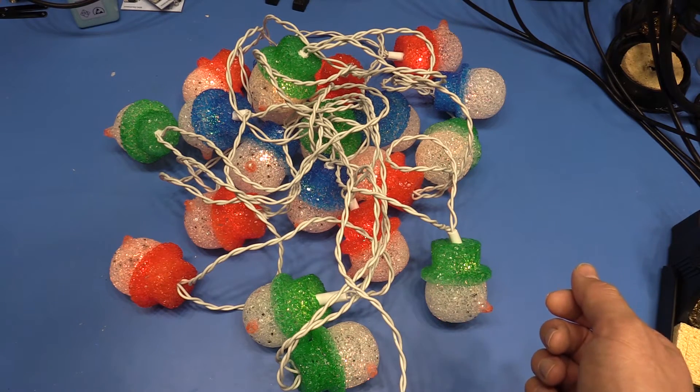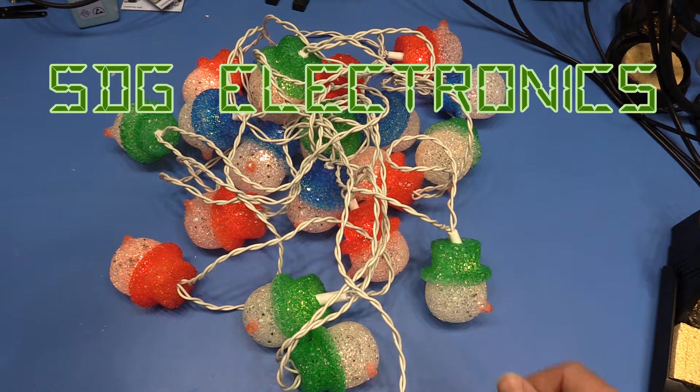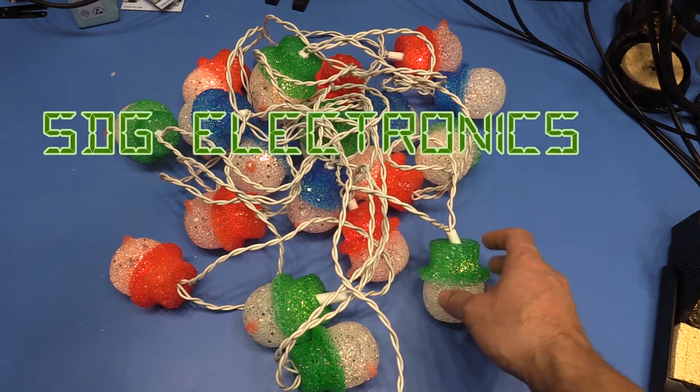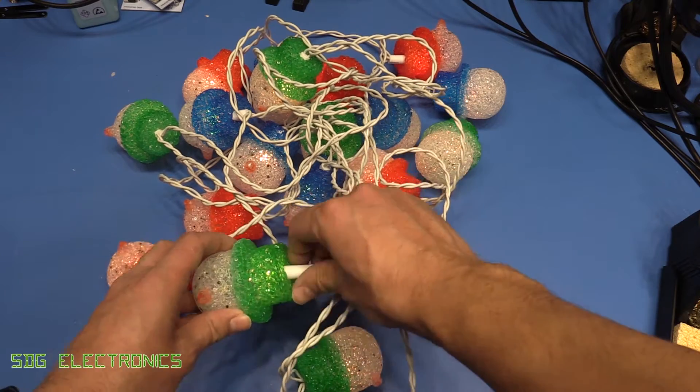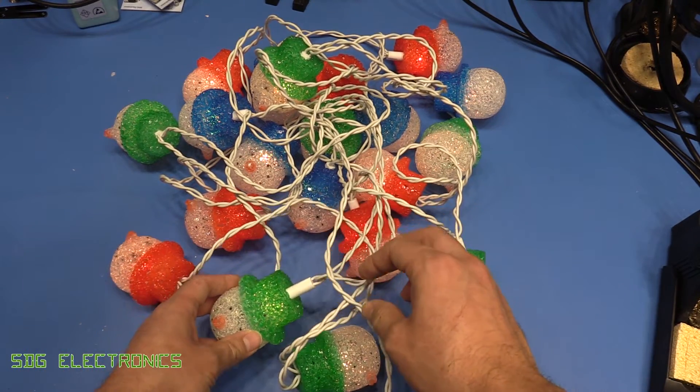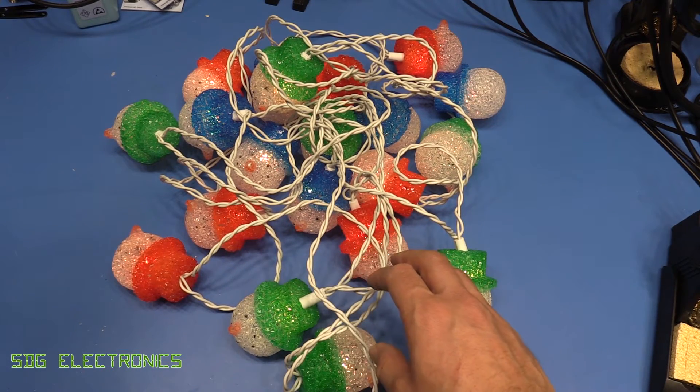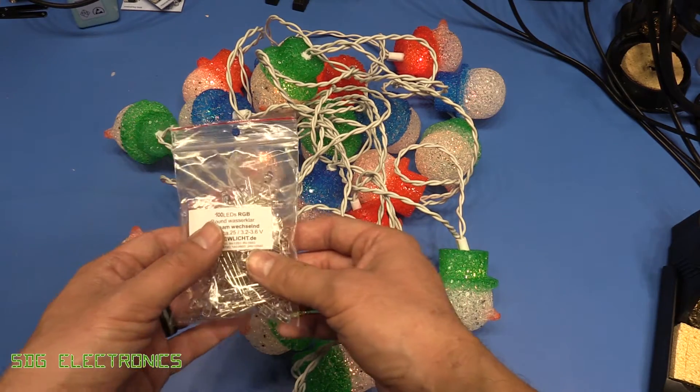Right, so we've got some Christmas lights on the bench today. It's all gone a bit Big Clive in the lab. These Christmas lights were going to get thrown out - they're the old incandescent style lamps, so 20 in series all powered off the mains. But Camden did quite like these, so what I thought we'd do is modify these with some LEDs.